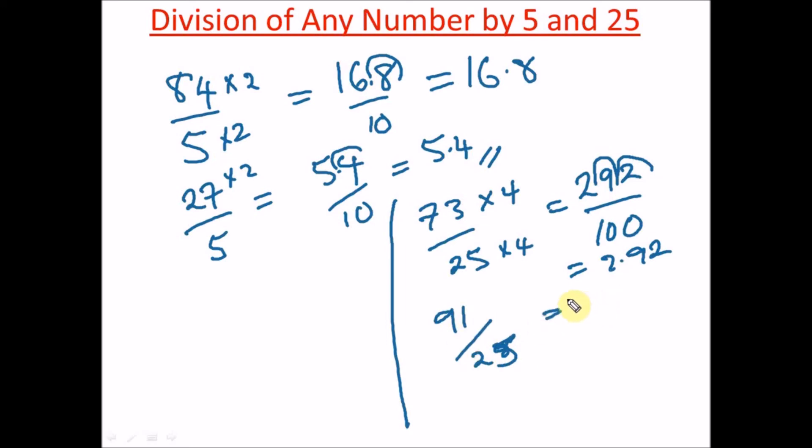This will be times 4. 91 times 4 gives us 364 divided by 100. We just shift the decimal place, and our answer is 3.64. You can see how easy this is to do.